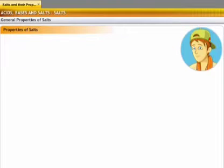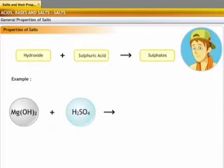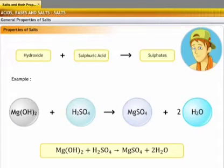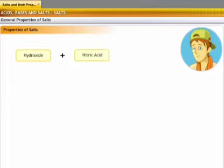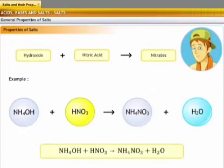Similarly, salts formed from any hydroxide and sulfuric acid are called sulfates. For example, magnesium hydroxide reacts with sulfuric acid to form magnesium sulfate. Accordingly, salts formed from any hydroxide and nitric acid are known as nitrates. Ammonium hydroxide reacts with nitric acid to form the salt ammonium nitrate.